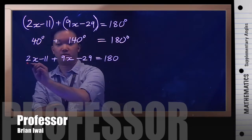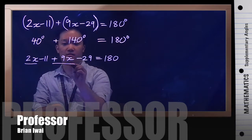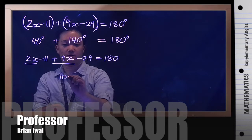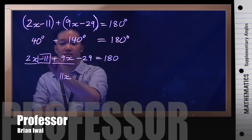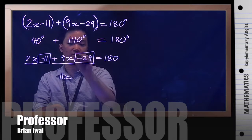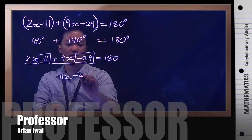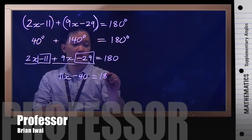Then you combine like terms. So I see a like term here and here. 2x plus 9x gives me 11x, and then this negative 11 and negative 29 are like terms, so if you combine them negative 11 minus 29 gives you negative 40 equal to 180.